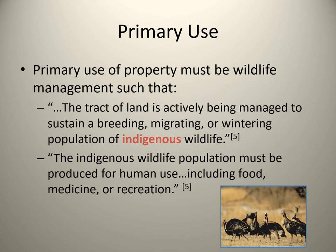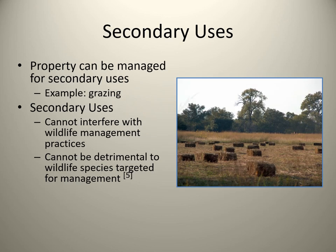When applying for the wildlife tax valuation, the primary use of the property must be wildlife management such that the tract of land is actively being managed to sustain a breeding, migrating, or wintering population of indigenous wildlife. The indigenous wildlife population must be produced for human use including food, medicine, or recreation. The property can be managed for secondary uses — an example would be grazing — but secondary uses cannot interfere with wildlife management practices and cannot be detrimental to the wildlife species being targeted for management.